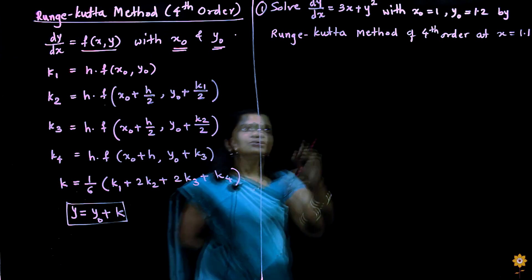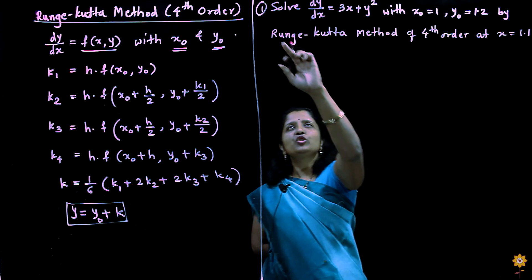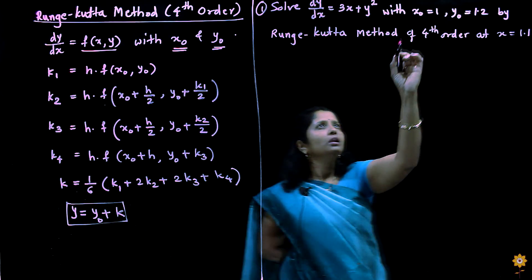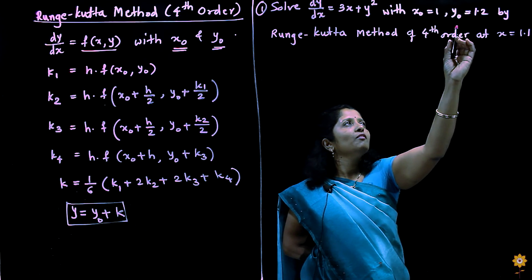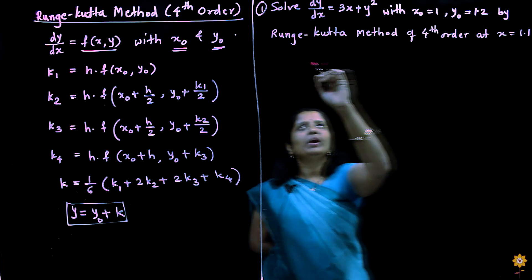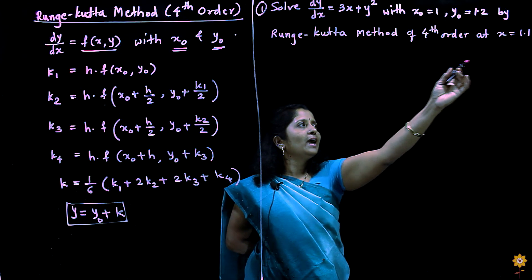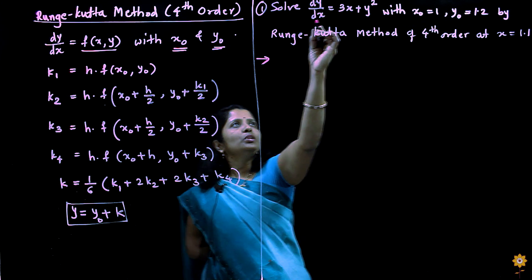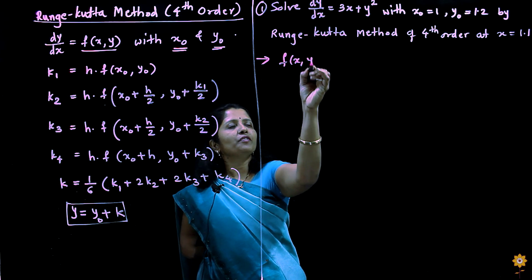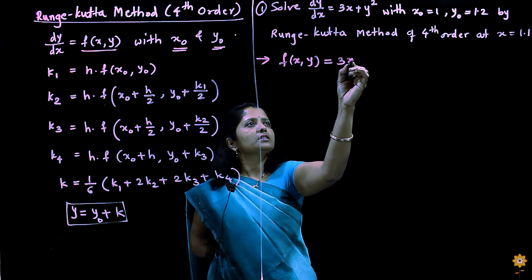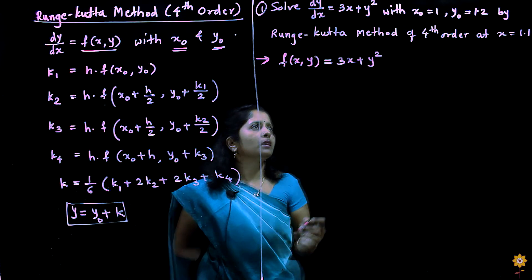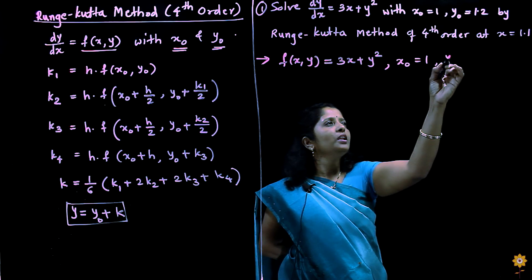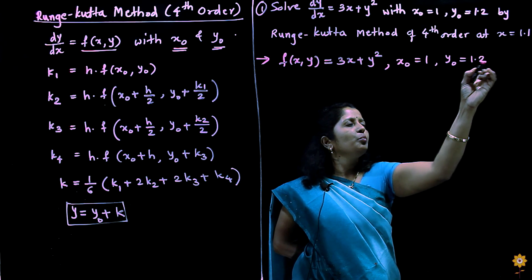Let us apply this method to an example. The question is: solve dy by dx equal to 3x plus y squared, with x0 equal to 1, y0 equal to 1.2, by the Runge-Kutta method of fourth order at x equal to 1.1. As we know, dy by dx is taken as f of xy, which here is 3x plus y squared. The initial conditions are x0 equal to 1 and y0 equal to 1.2.